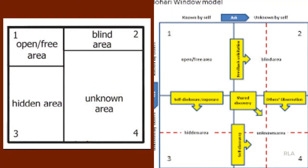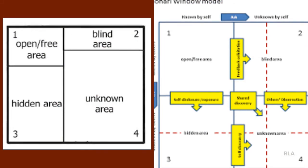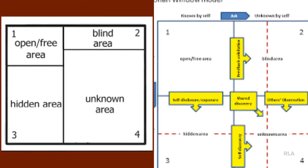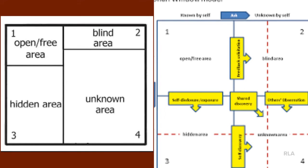In the Johari Window model, the open pane in any relationship starts out small, and as we disclose, that open pane grows and gets bigger and bigger, making all the other three panes of the window smaller.